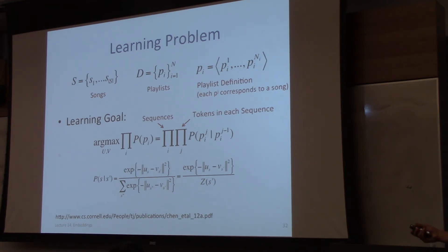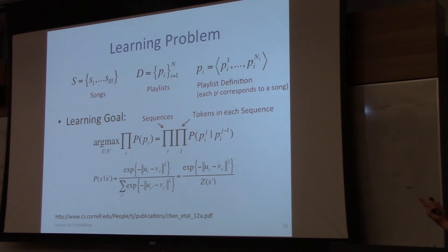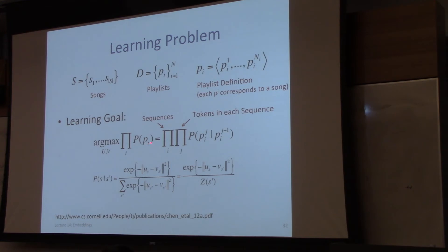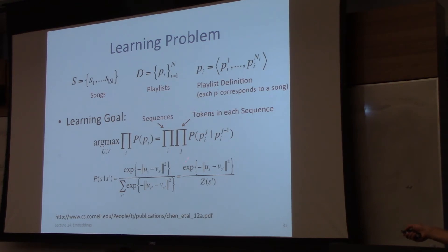The learning problem is: given a set of playlists scraped from LastFM — perhaps a hundred thousand or a million playlists — each being a sequence of songs, the goal is to find a U and V matrix over songs that maximizes the probability of the training set. This is unsupervised learning. The probability function is Markovian so it decomposes into a product. We have to learn U and V to maximize this.